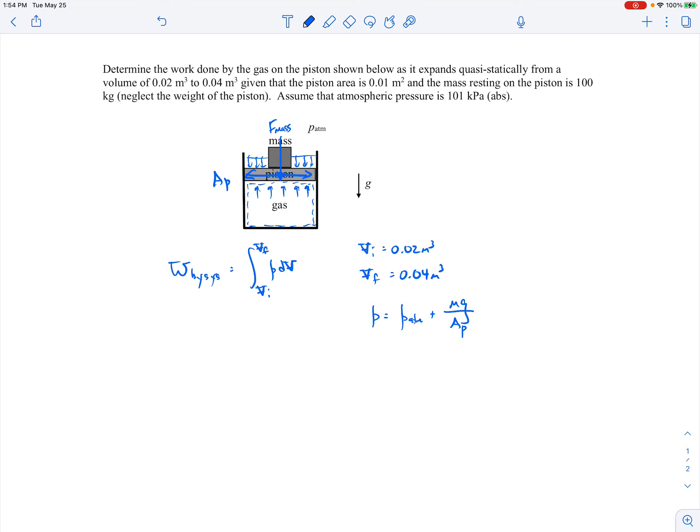So I'll just write it as mg divided by the cross-sectional area of the piston, which is A_p. Here we're told that atmospheric pressure is 101 times 10 to the third pascals absolute pressure. The mass is 100 kilograms. Gravity of course is 9.81 meters per second squared.